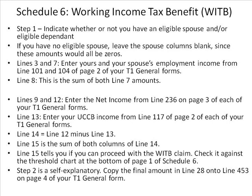Step 1 of Schedule 6: indicate whether or not you have an eligible spouse and/or eligible dependent. If you have no eligible spouse, leave the spouse columns blank. Lines 3 and 7: enter yours and your spouse's employment income from lines 101 and 104. Line 8: this is the sum of both line 7 amounts. Lines 9 and 12: enter the net income from line 236. Line 13: enter your UCCB income from line 117. Line 14 equals line 12 minus line 13. Line 15 is the sum of both columns of line 14 and tells you if you can proceed with the WITB claim. Step 2 is self-explanatory. Copy the final amount from line 28 onto line 453 on page 4 of your T1 General Form.